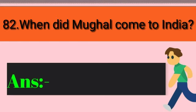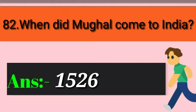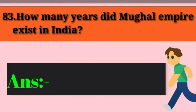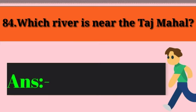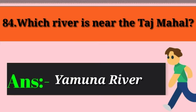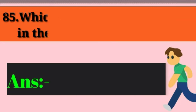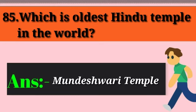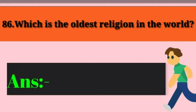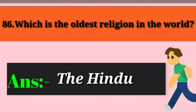Question 82: When did the Mughals come to India? Answer: 1526. Question 83: How many years did the Mughal Empire exist in India? Answer: 300 years. Question 84: Which river is near the Taj Mahal? Answer: Yamuna River. Question 85: Which is the oldest Hindu temple in the world? Answer: Mundeshwari Temple. Question 86: Which is the oldest religion in the world? Answer: Hinduism.